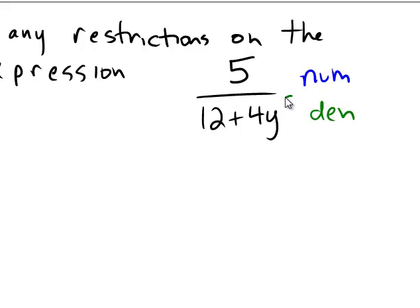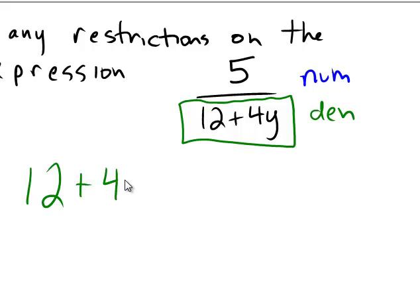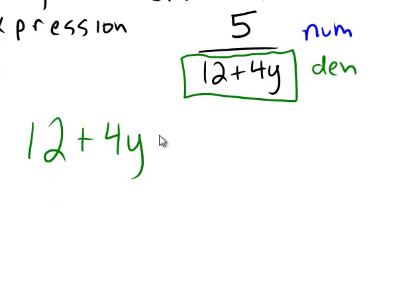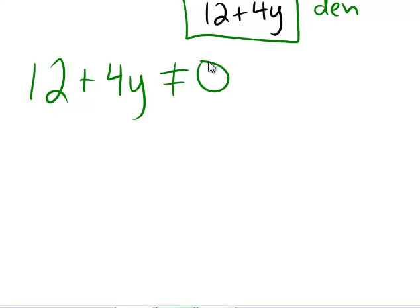I'm going to box the denominator because that's the part on the bottom. We need to make sure that the quantity 12 plus 4y is never equal to 0. Having a 0 in the bottom would be terrible, would be very bad.